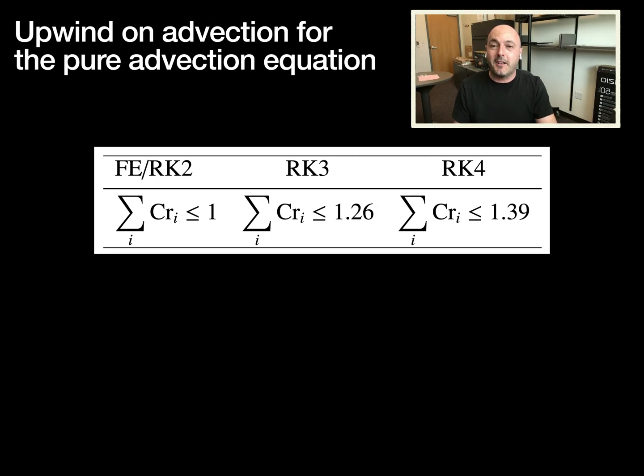Finally, if you consider only the advection equation and apply upwind, we know that the maximum Courant number for forward Euler is one, but what is the Courant number for RK2, RK3, RK4? This is summarized in this table. Turns out for RK2, the maximum Courant number is still one, but RK3 pushes you up to 1.26, and RK4 pushes it up to 1.39.